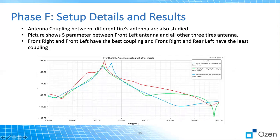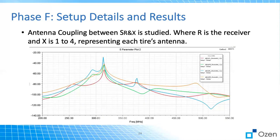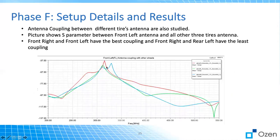Another parameter we studied is the effect of tires on each other. As you can see, here we have around minus 25 dB, and here it went to minus 37 dB. For instance, FR over FL means the front-right tire with the front-left tire, or RR with FL — rear-right tire with front-left. And this is RL with FL.